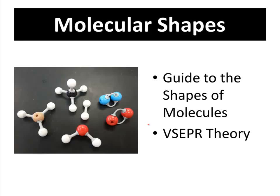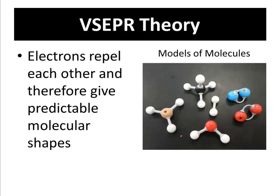Hey dudes, it's Mr. Post, and on today's video we'll be checking out molecular shapes. This is kind of just a quick guide to how to figure out the shapes of molecules. It all stems from what's known as the VSEPR theory — the valence shell electron pair repulsion theory.